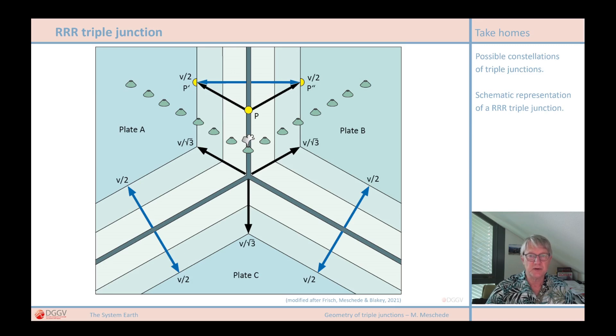I will go into this and the relationship between the hotspot track and relative to absolute plate motion in more detail in the videos after next. Next, in the following video, I would like to discuss a few real examples of triple junctions on Earth.